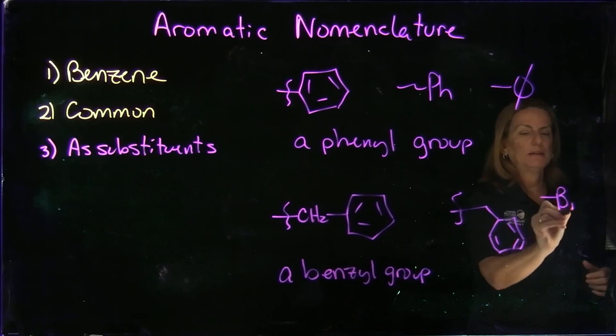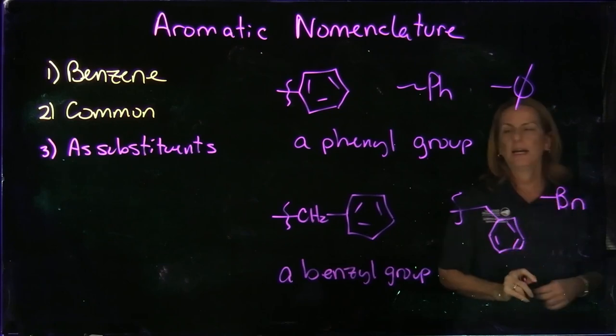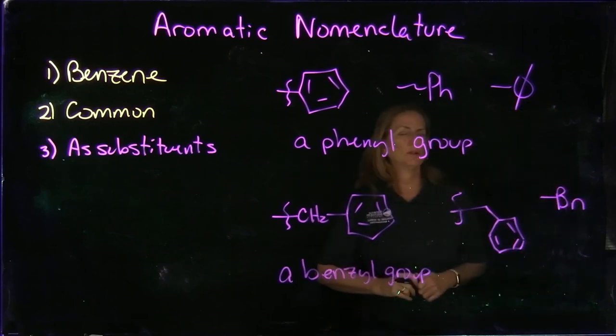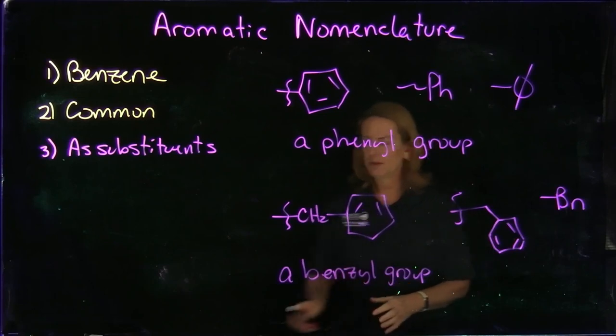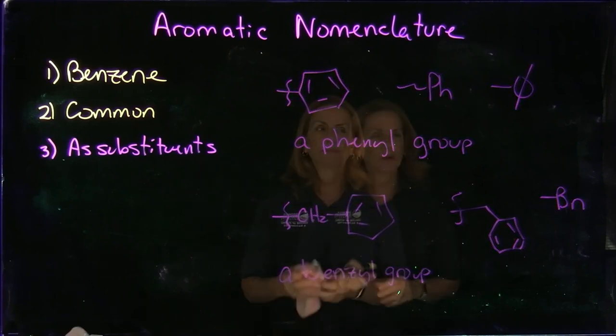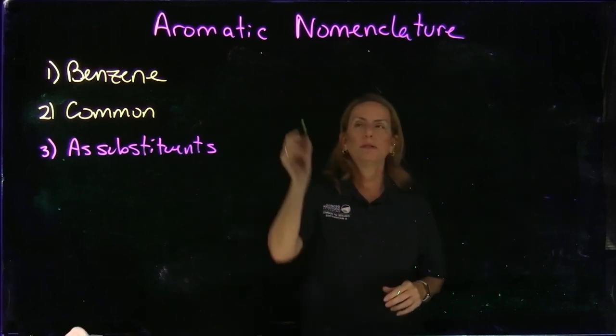There's also a special case: if you have a benzene ring with an extra carbon, that is called a benzyl group — not just benzene, but benzene plus one extra carbon. You could use 'Bn' as the symbol to represent a benzyl group.